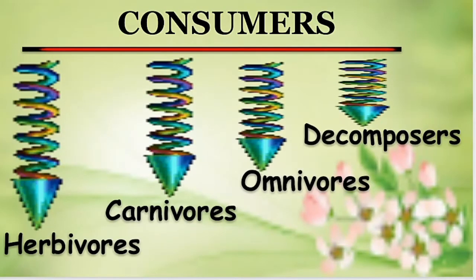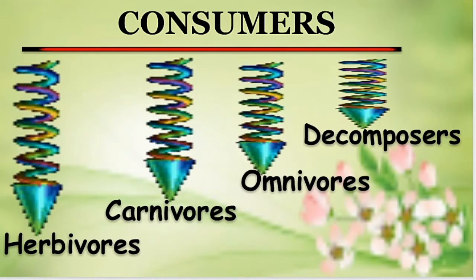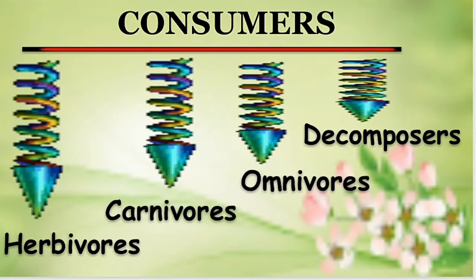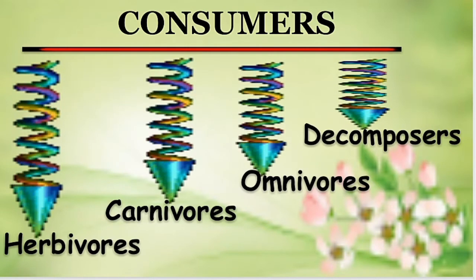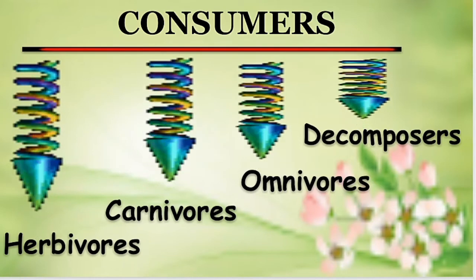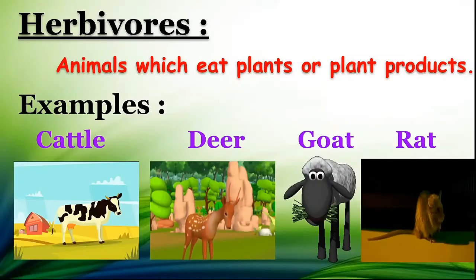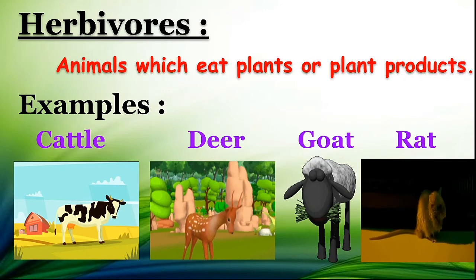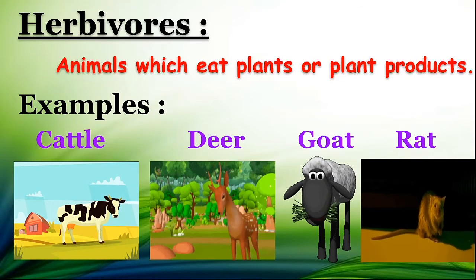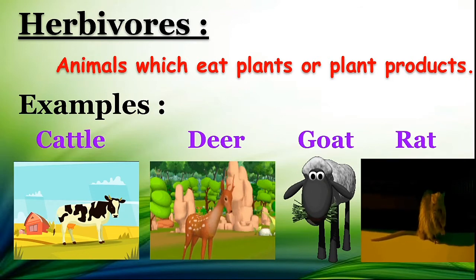There are many types of consumers, and we can classify them depending on the food they consume. These are herbivores, carnivores, omnivores and decomposers. Animals which eat plants or plant products are called herbivores. For example: cattle, deer, goat and rat.